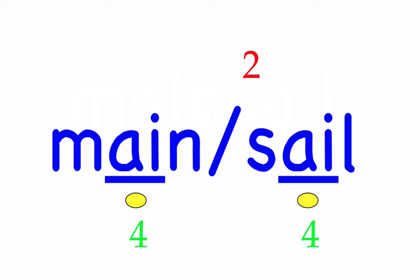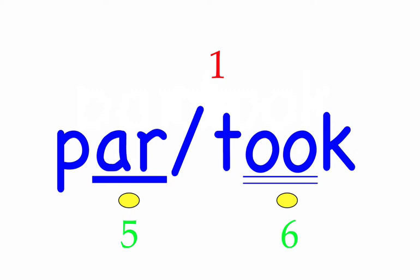Partook. We partook in the activity. First syllable: par, two sounds, P-R. Second syllable: took, three sounds, T-oo-K. Partook — mark the word. O-O is representing the second sound for O-O, 'u' as in foot, in this word.